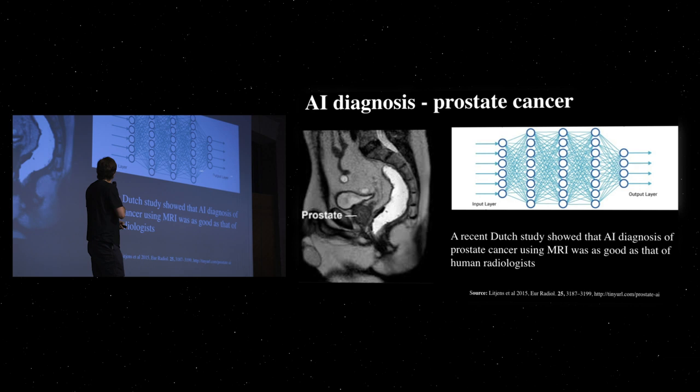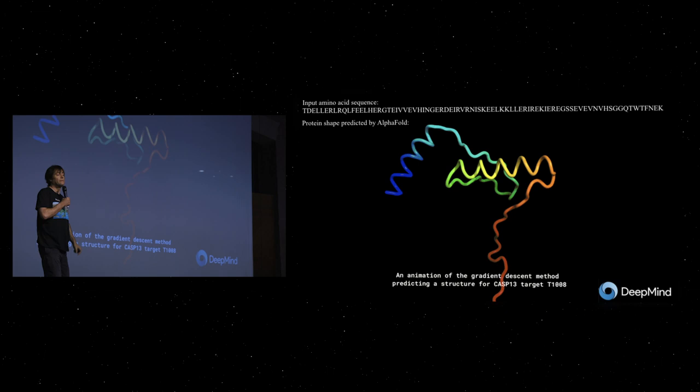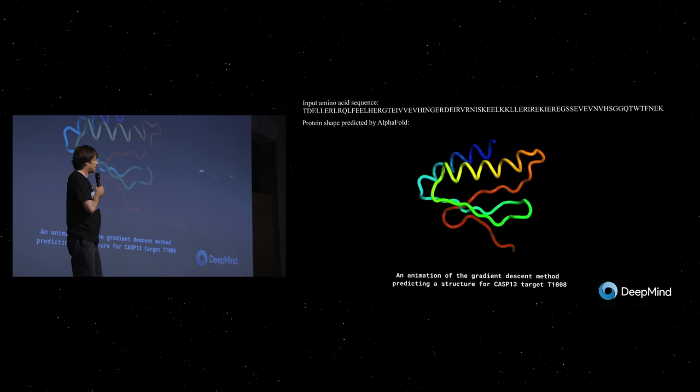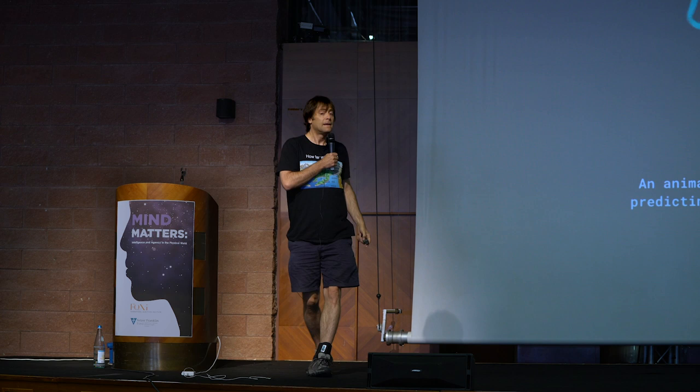Not long ago AI couldn't do face recognition, now AI can simulate Anthony Aguirre's face saying things that he never said. AI could certainly not save lives but now it can diagnose prostate cancer, lung cancer, and eye diseases as well or better as human physicians and a lot cheaper. We were totally stuck on the protein folding problem and just last December DeepMind came and crushed all the human competition, doing real science.